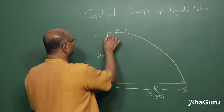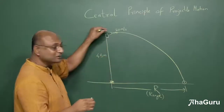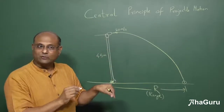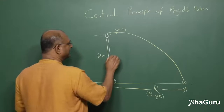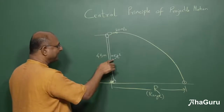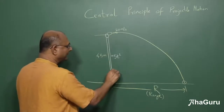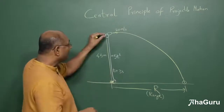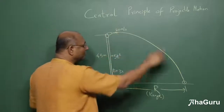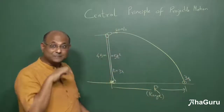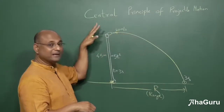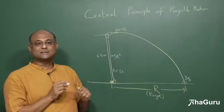We solve this in two parts. First, use the first principle: assume the ball was dropped. A dropped ball travels 5t² = 45, so t² = 9 and t = 3 seconds. This is the time for the dropped ball — but the thrown ball also takes 3 seconds, by the first principle. Whether you throw it horizontally or drop it, the time to fall from 45 metres is the same.